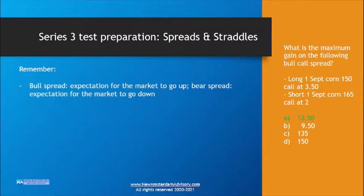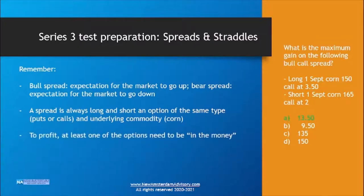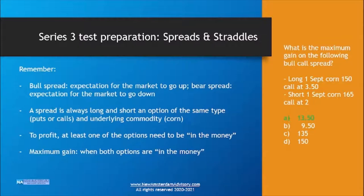The answer is A: 1,350. Key takeaways: a bull spread is the expectation for the market to go up; a bear spread is for the expectation of the market to go down. A spread is always long and short an option of the same type — either puts or calls — on the same underlying commodity. To profit, at least one of the options needs to be in the money. Maximum gain happens when both are in the money, and once both are in the money, it doesn't matter how much further the price moves.